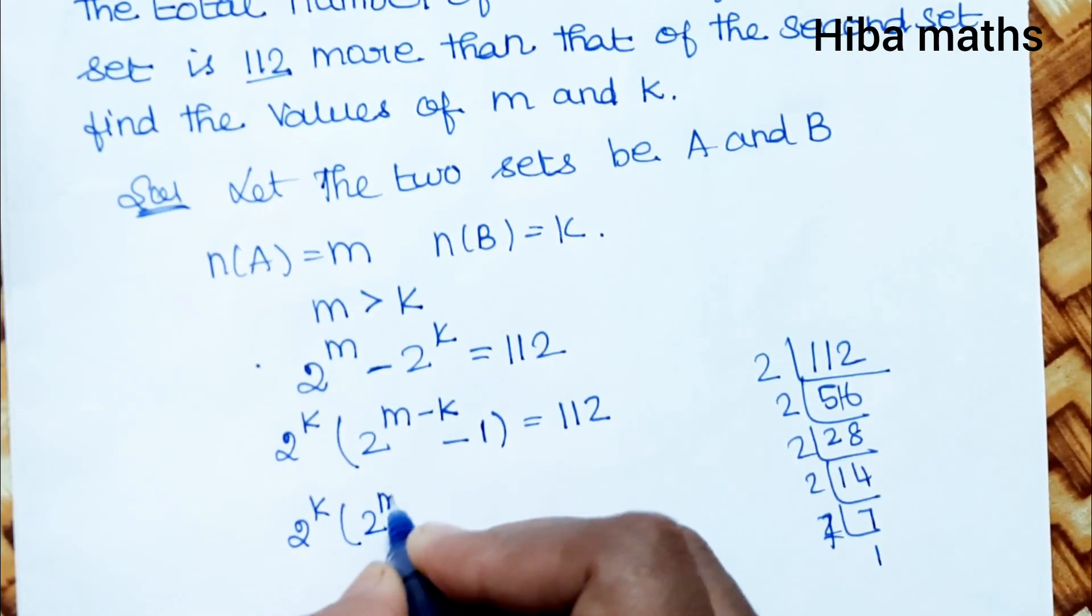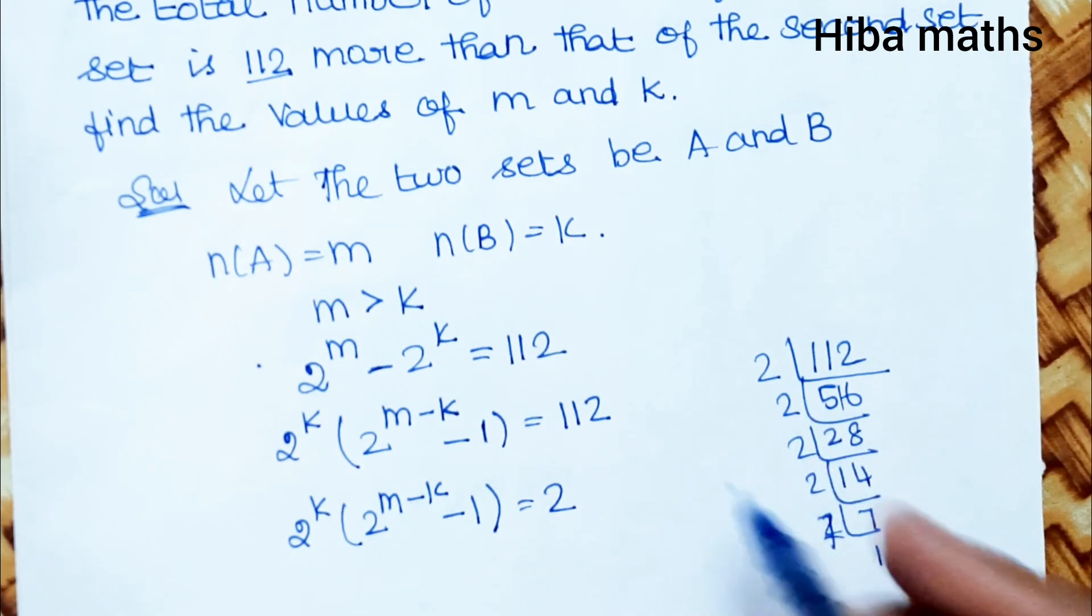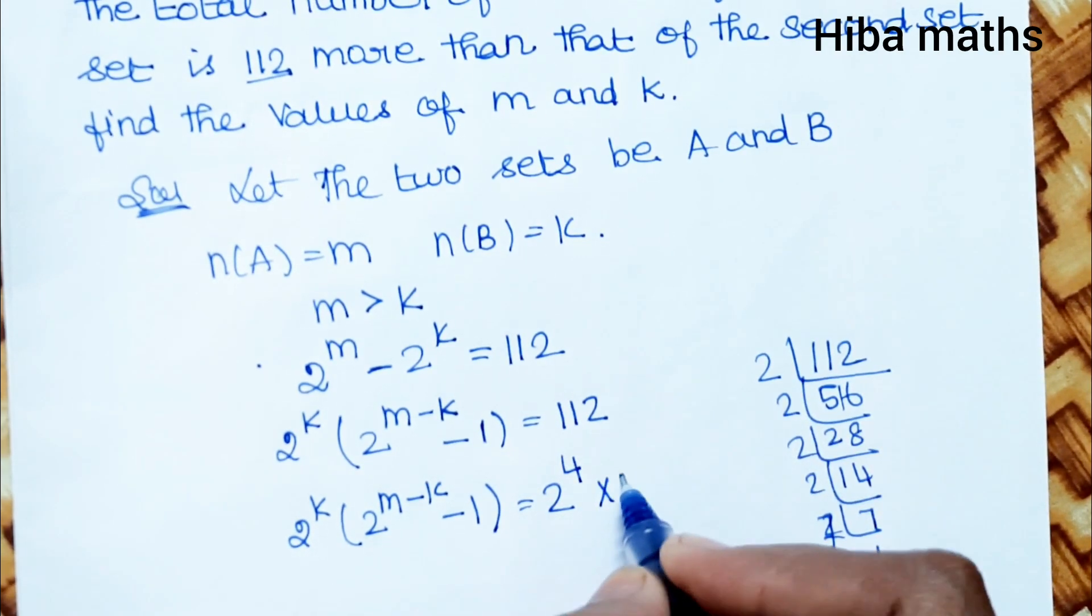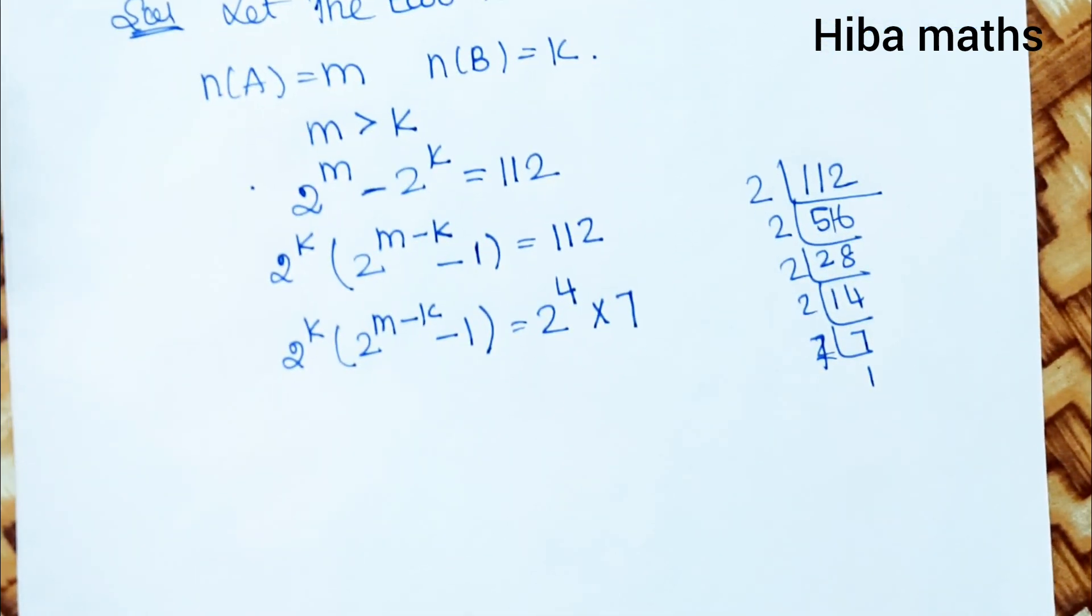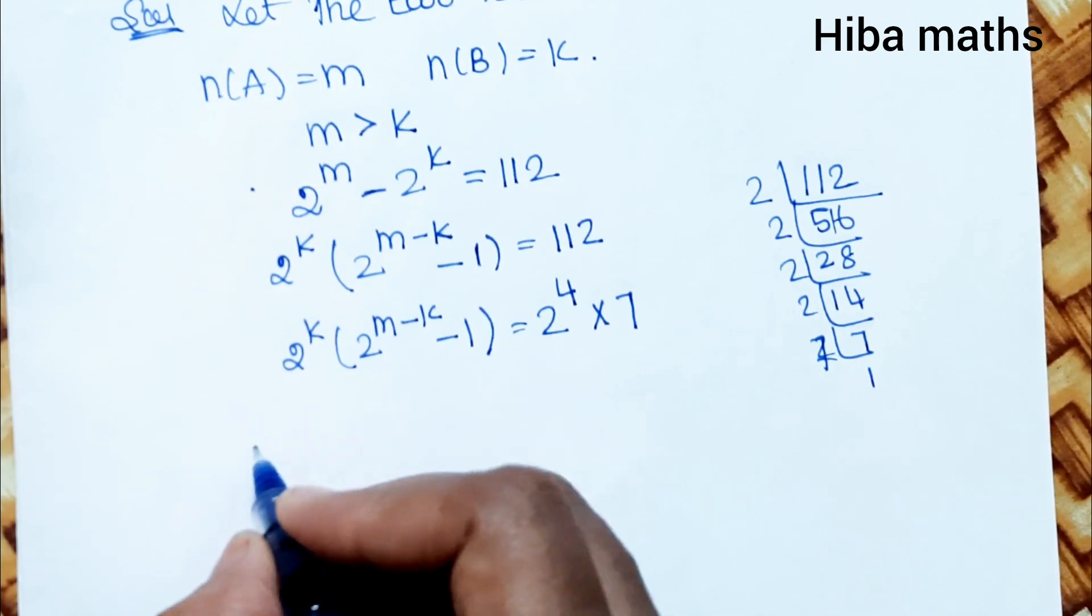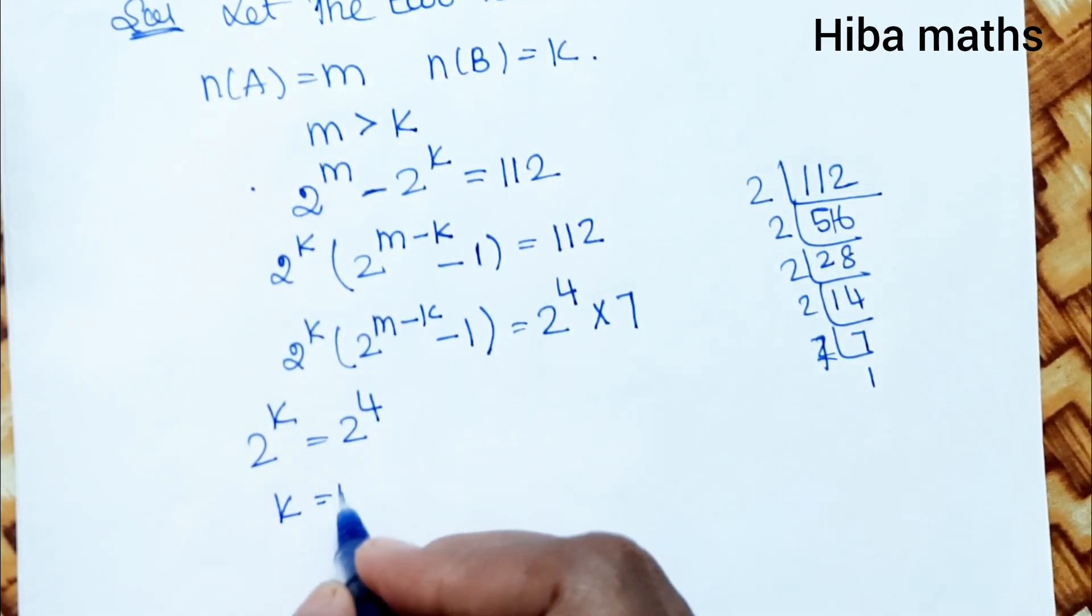2^K(2^(M-K) - 1) = 2^4 × 7. So 2^K = 2^4, and 2^(M-K) - 1 = 7. Then K = 4.